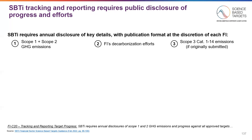Regardless of the format, financial institutions must disclose their Scope 1 and Scope 2 emissions, the qualitative summary of their decarbonization efforts in the past year, and third, their Scope 3 Category 1 through 14 emissions if they were included in the financial institutions' targets.